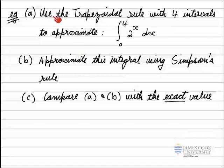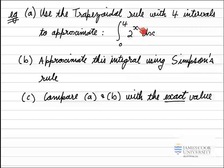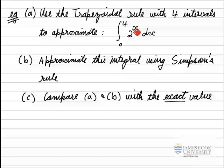In this example we've been asked to use the trapezoidal rule with four intervals to approximate the integral of 2 to the x with respect to x, where x goes from 0 to 4. We've also been asked to approximate the integral using Simpson's rule with the same four intervals, and compare each of the approximations to the exact value of this integral, which we'll find using an exact method.